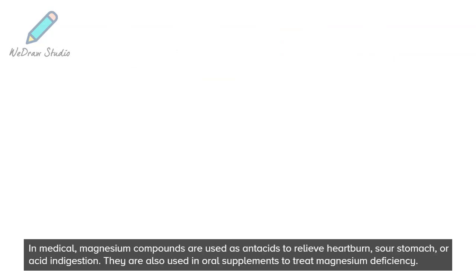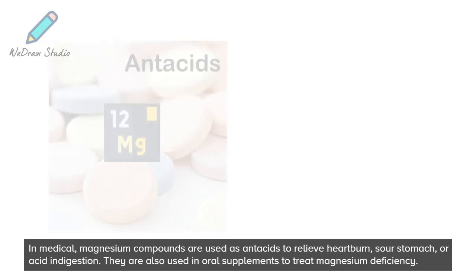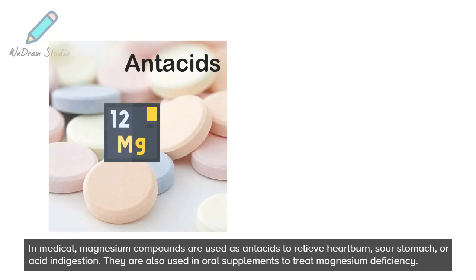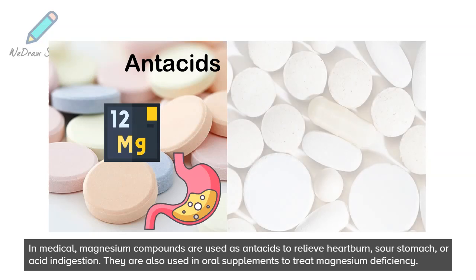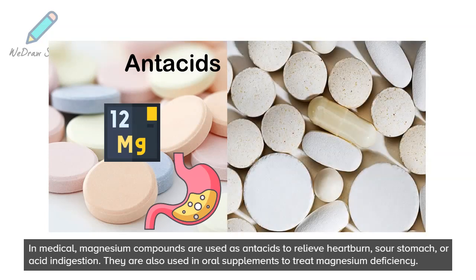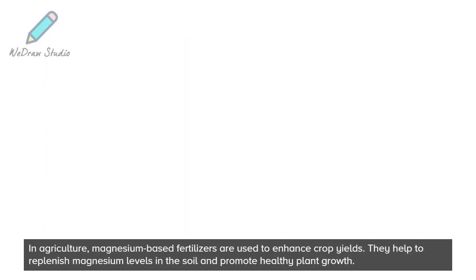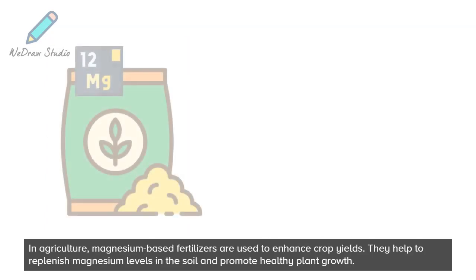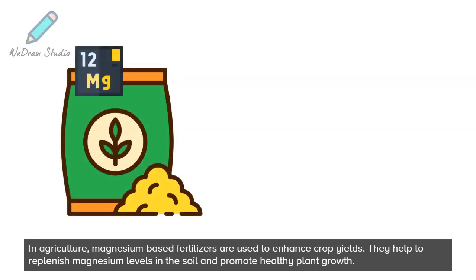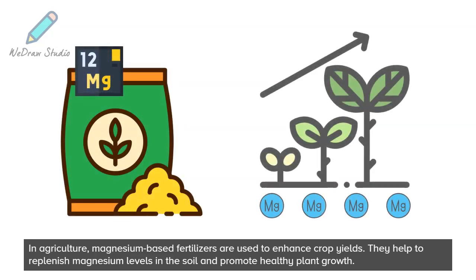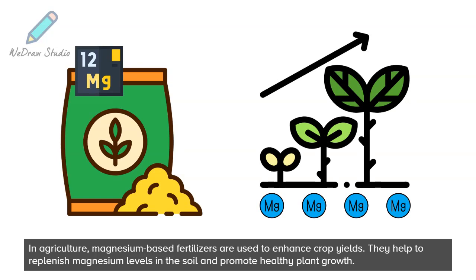In medicine, magnesium compounds are used as antacids to relieve heartburn, sour stomach, or acid indigestion. They are also used in oral supplements to treat magnesium deficiency. In agriculture, magnesium-based fertilizers are used to enhance crop yields, replenish magnesium levels in the soil, and promote healthy plant growth.